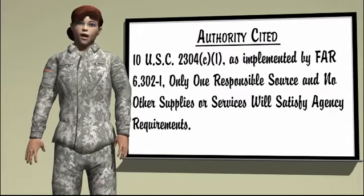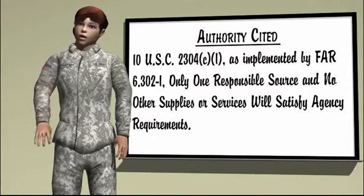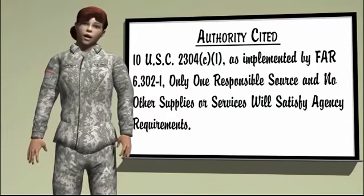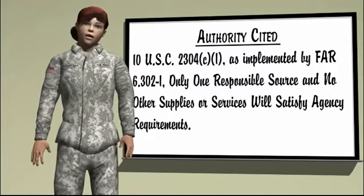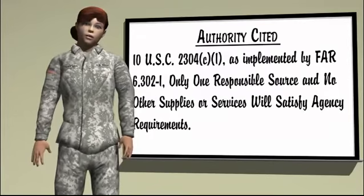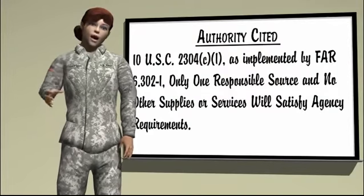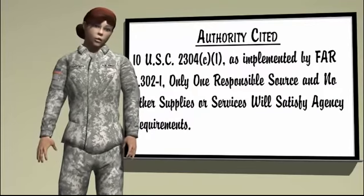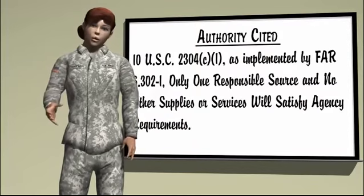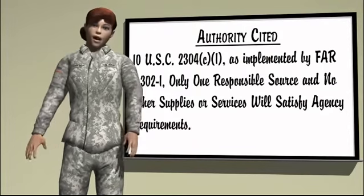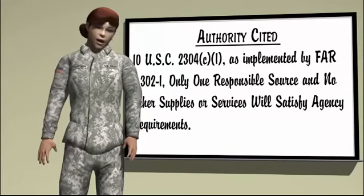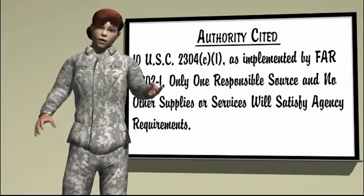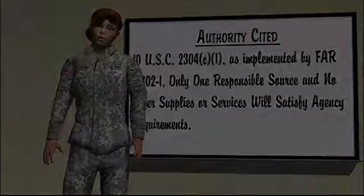Authority Cited. Identify the statutory authority, FAR citation, and FAR title that permits other than full and open competition. For example, 10 U.S.C. 2304(c)(1), as implemented by FAR 6302-1: Only one responsible source and no other supplies or services will satisfy agency requirements. If there are applicable FAR subparagraphs that further justify use of the authority cited, identify those as well.